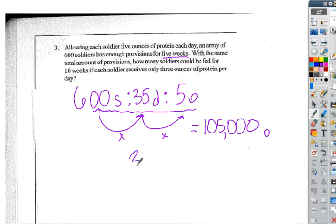And then what we're trying to find is how many soldiers. Okay, so we know that now the new number is 3 ounces per soldier a day, and we're going with 70 days.